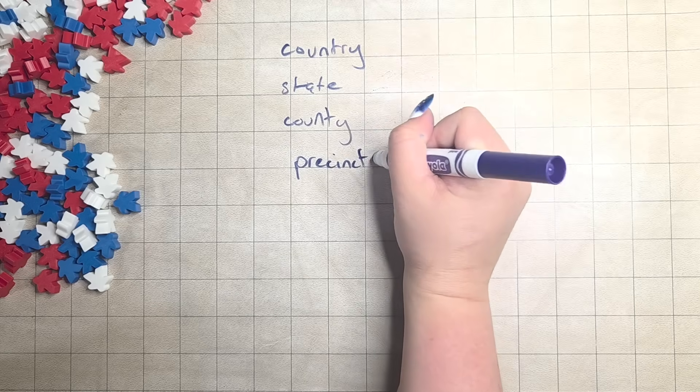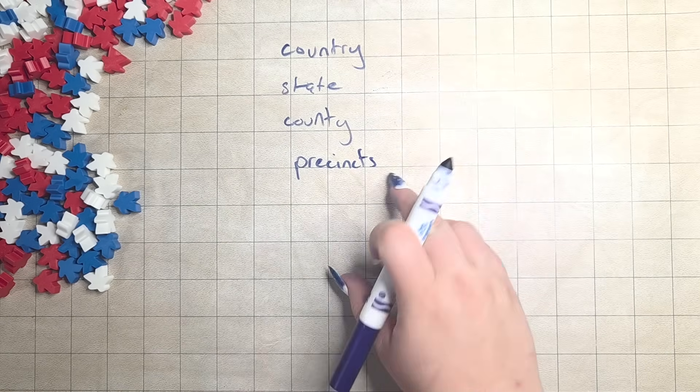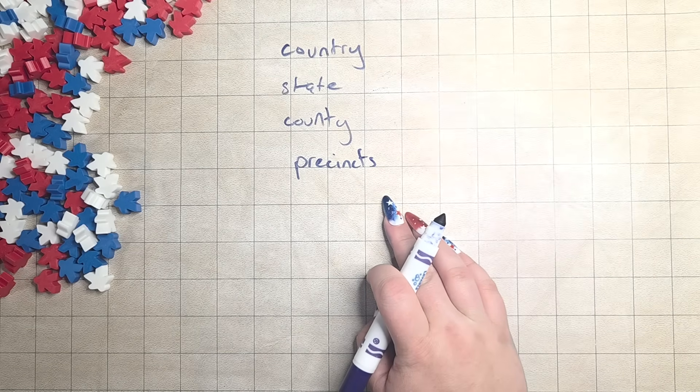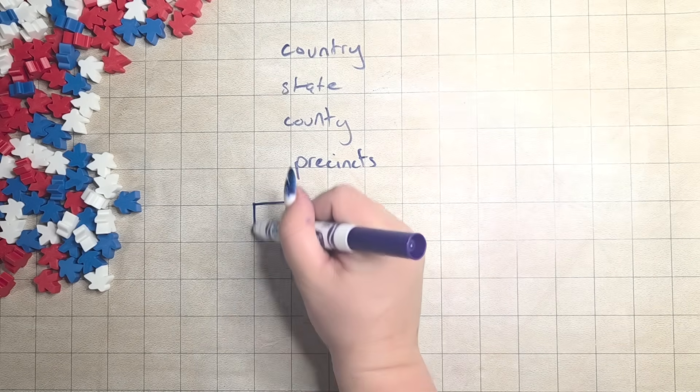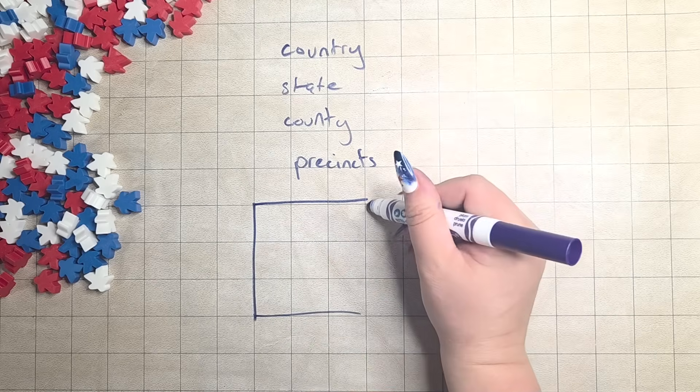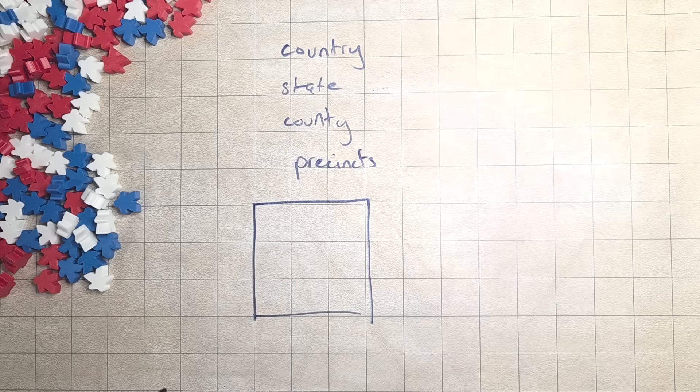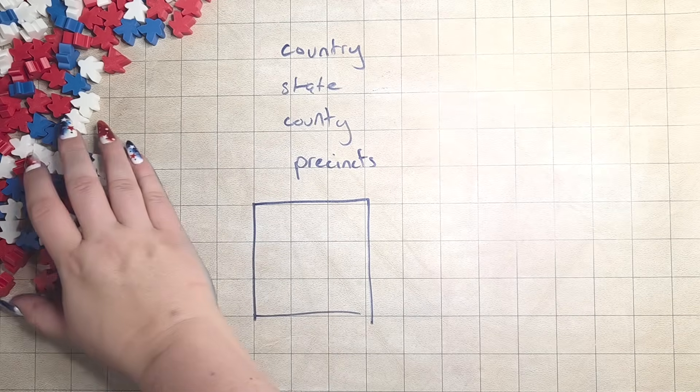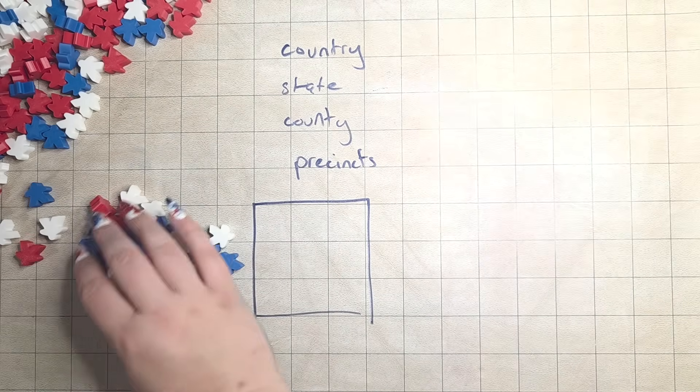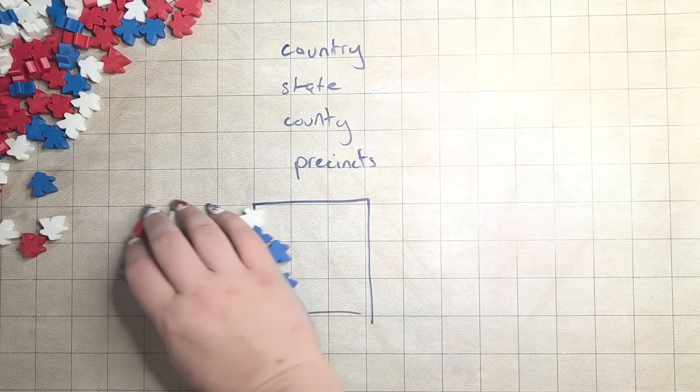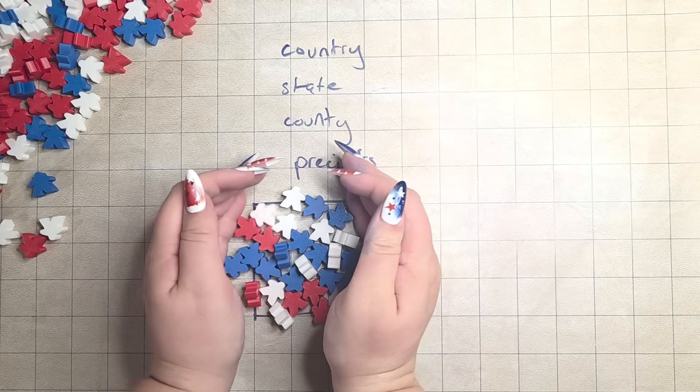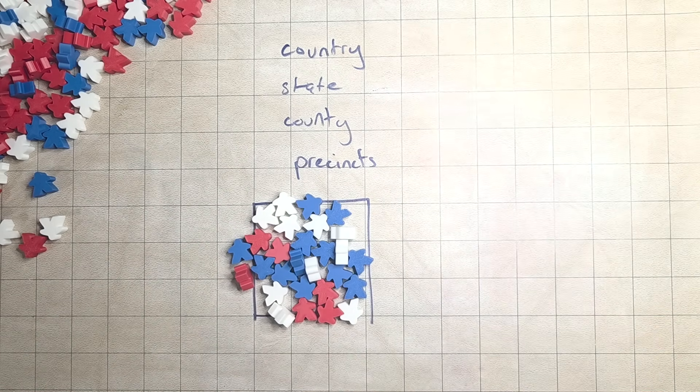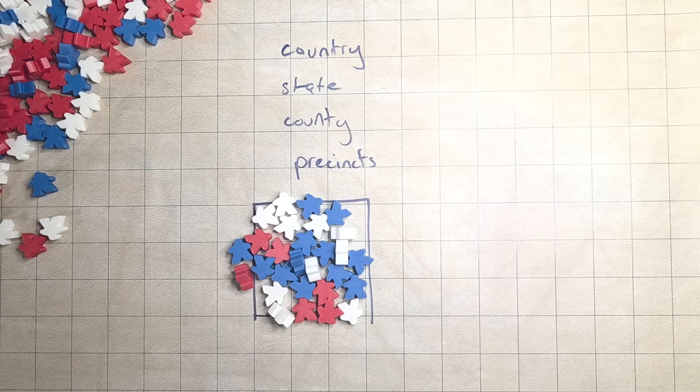Now, counties subdivide themselves further into precincts. Precincts are essentially your neighborhood. So, they can vary in size and number, and some states don't necessarily lock you to vote within the precinct in which you live. However, everyone has a precinct in which they live, and if your precinct is particularly dense, this region could be as small as just a few city blocks.